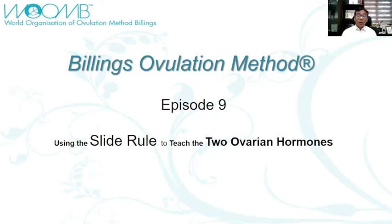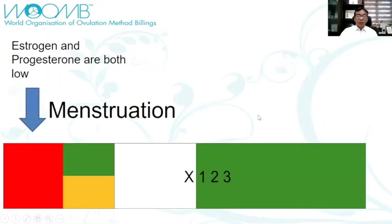The two ovarian hormones are estrogen and progesterone. According to Drs. John and Evelyn Billings, estrogen and progesterone are both low during menstrual bleeding. This is the period wherein there is no ovarian activity.